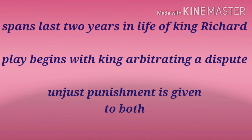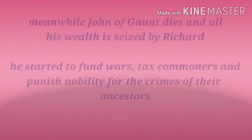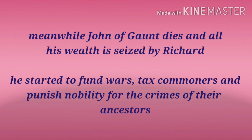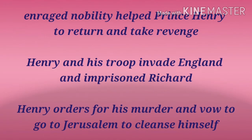Mowbray is permanently banished and Henry is banished for six years. This was the first major mistake committed by the king in a series of mistakes eventually leading to his death — an abrupt, arbitrary decision which increased suspicion of the king's involvement in the death of the Duke of Gloucester. Meanwhile, his uncle John of Gaunt dies and all his wealth and land is seized by Richard, which rightfully belonged to Henry, the son of John of Gaunt. Richard used public money to fund wars and taxed the commoners, also fining nobles for crimes committed by their ancestors, creating unrest among nobles and commoners alike.